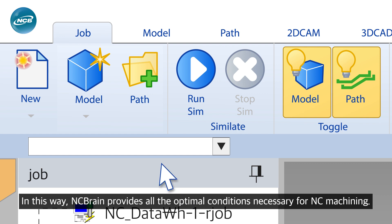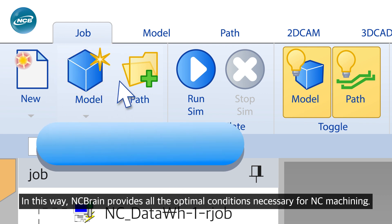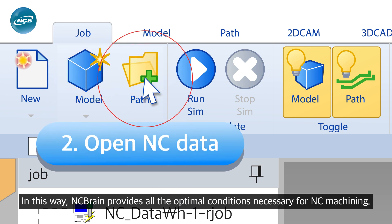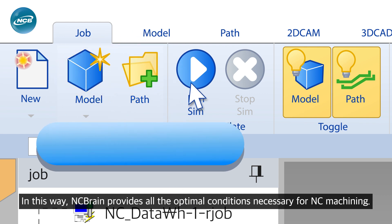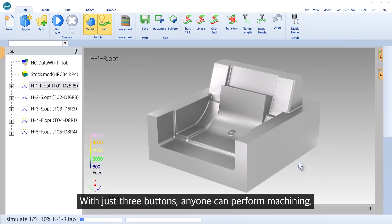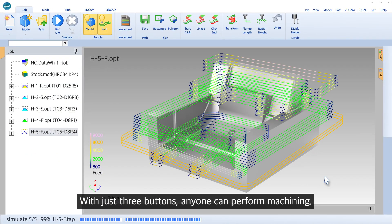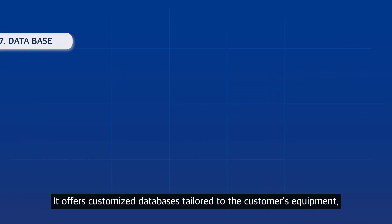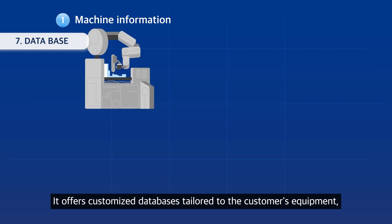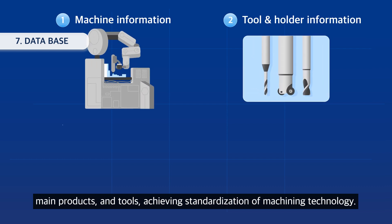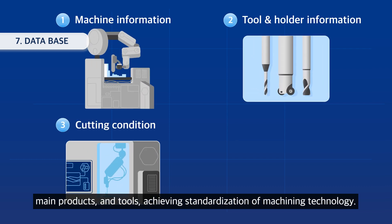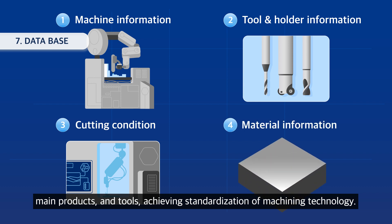In this way, NC Brain provides all the optimal conditions necessary for NC machining. With just three buttons, anyone can perform machining. It offers customized databases tailored to the customer's equipment, main products, and tools, achieving standardization of machining technology.